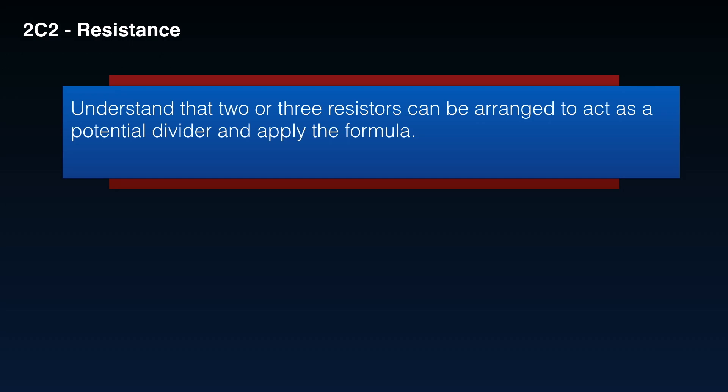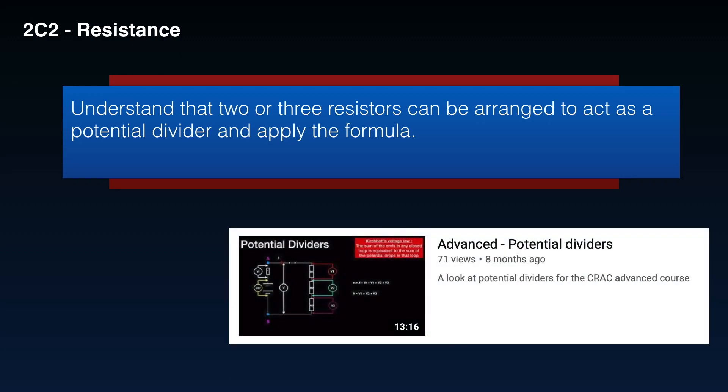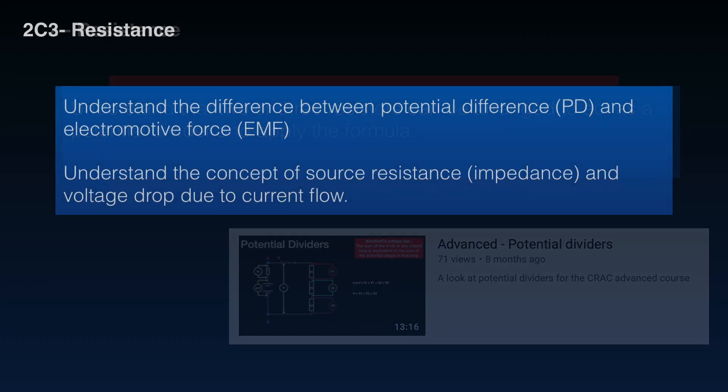Now, that expands on the intermediate syllabus. It says, understand that two or three resistors can be arranged to act as a potential divider and apply the formula. Once again, this has been pulled down from the old advanced syllabus into the intermediate syllabus. Have a look at the video, Advanced Potential Dividers. That will give you an idea of what's been covered.